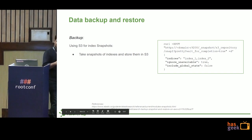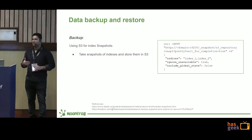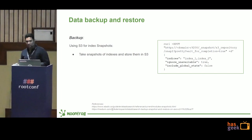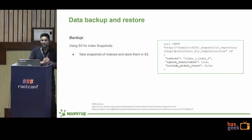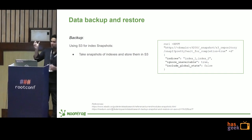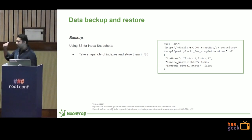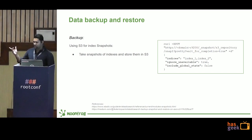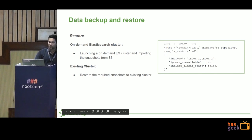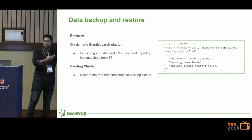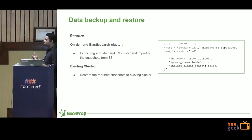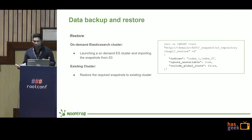That is why we implemented a backup mechanism. First, you install the S3 repository plugin and register an S3 bucket. Then you can use a simple curl request, providing the snapshot name and the indexes to include, and it will take a backup to S3. This is how we take daily backups. For restoring, you can use a curl request specifying the snapshot name and the indexes to restore. Restoring can be done to a brand new on-demand cluster, such as a staging cluster, or to an existing cluster.